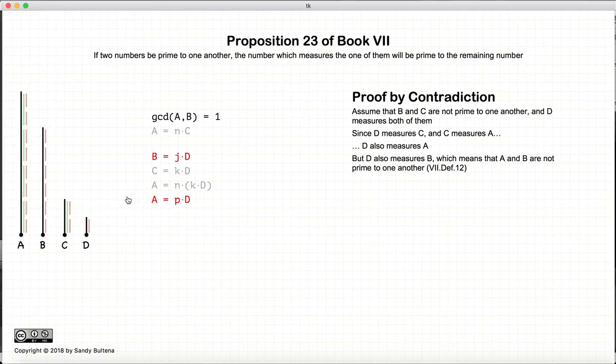So now we have d measures b, and it also measures a, which violates the original condition that a and b are relatively prime. So there can be no number d that measures b and c, and thus b and c are relatively prime.